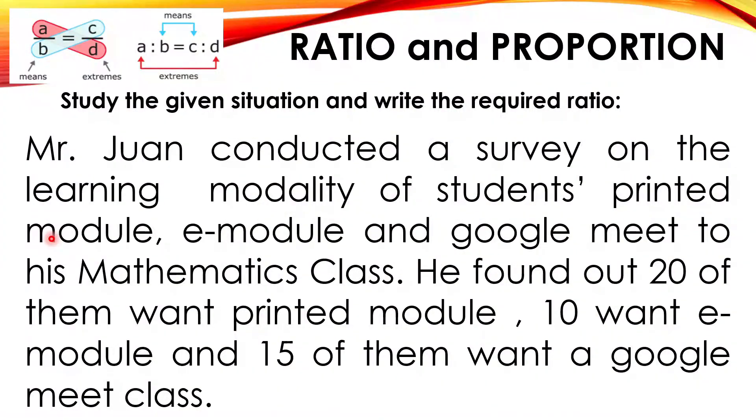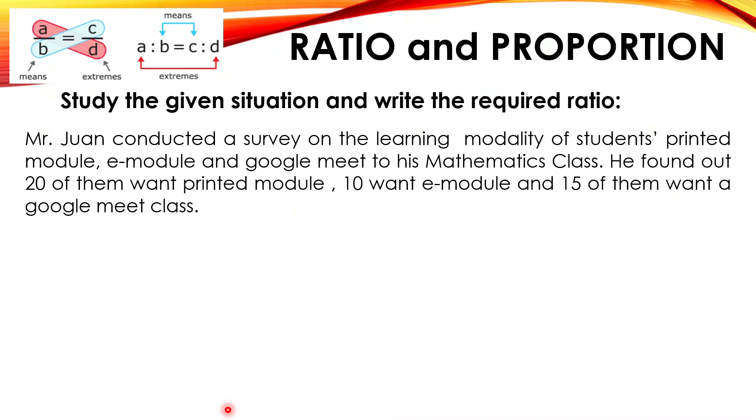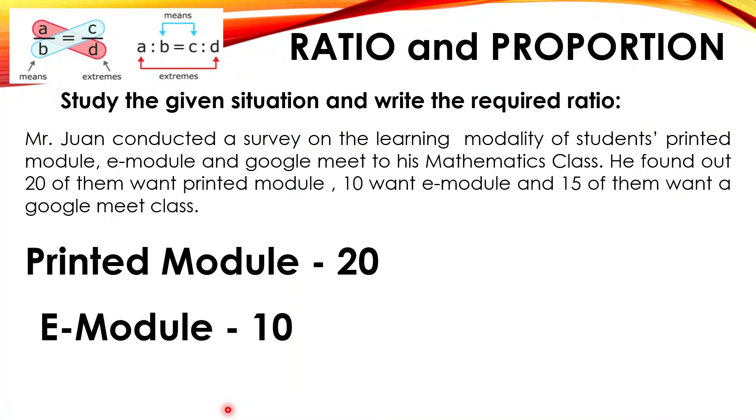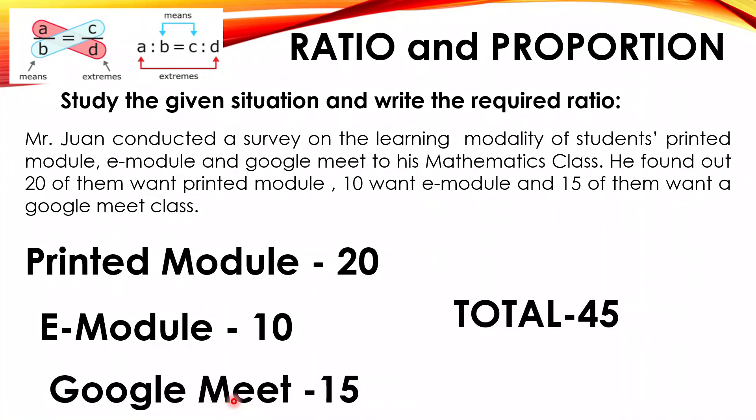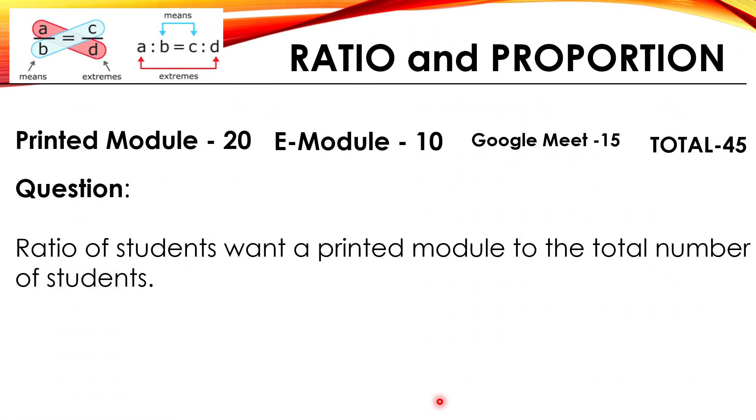Let's study this situation. Mr. Wan conducted a survey on the learning modality of students: printed module, e-module, and Google Meet for his mathematics class. He found out 20 of them want printed module, 10 want e-module, and 15 of them want a Google Meet class. Let's write the given. Printed module is 20, e-module is 10, Google Meet is 15, so a total of 45 students. 20 plus 10 plus 15 is 45. Let's have here the situation or the question.